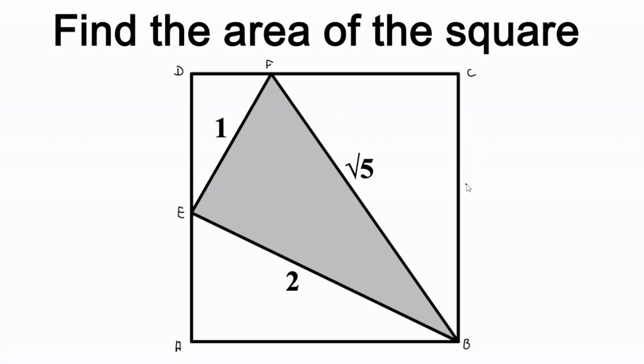Since we're looking for the area of the square, let's just denote X to be the side length of our square. So to find the area, all we need to do is to find X squared.